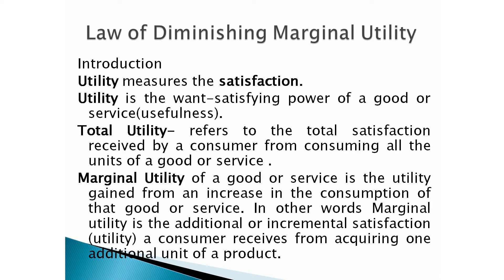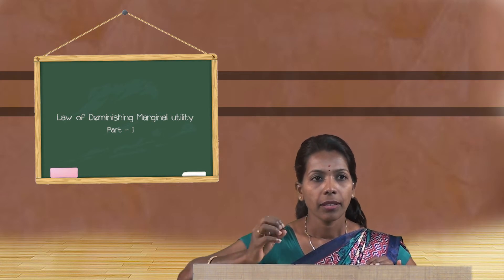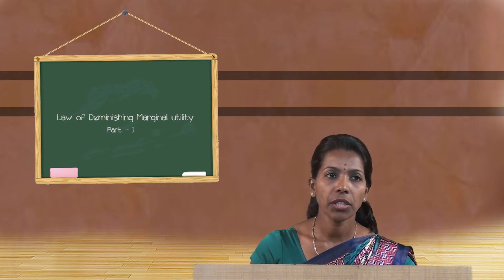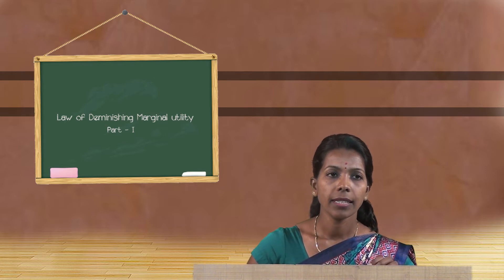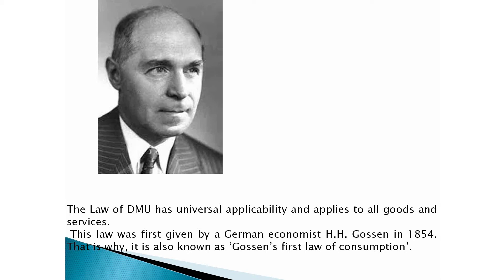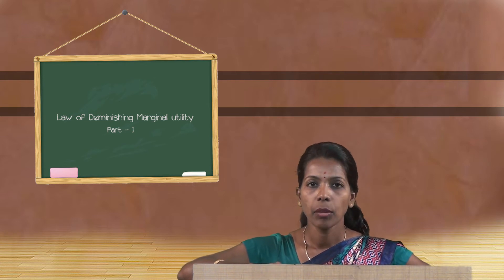Now we will understand the person responsible for the introduction of the Law of Diminishing Marginal Utility. This law has universal applicability and applies to all goods and services. It was first given by German economist H.H. Gossen in 1854, which is why it is also known as Gossen's First Law of Consumption. Later it was systematically developed and popularized by Alfred Marshall.